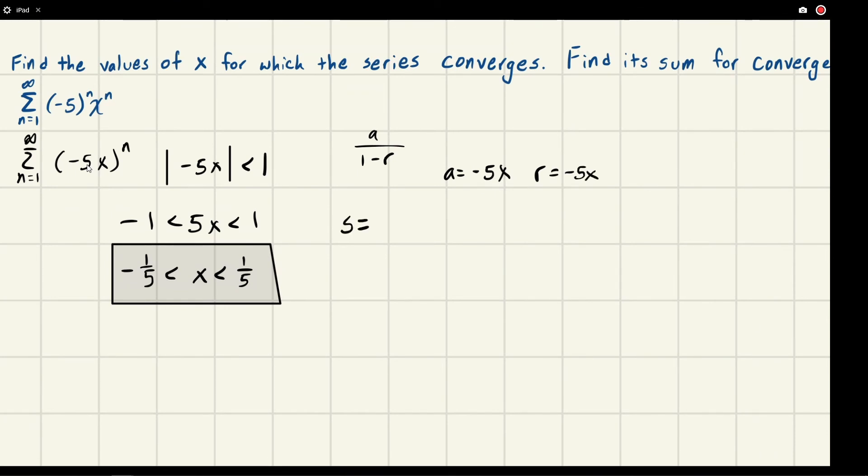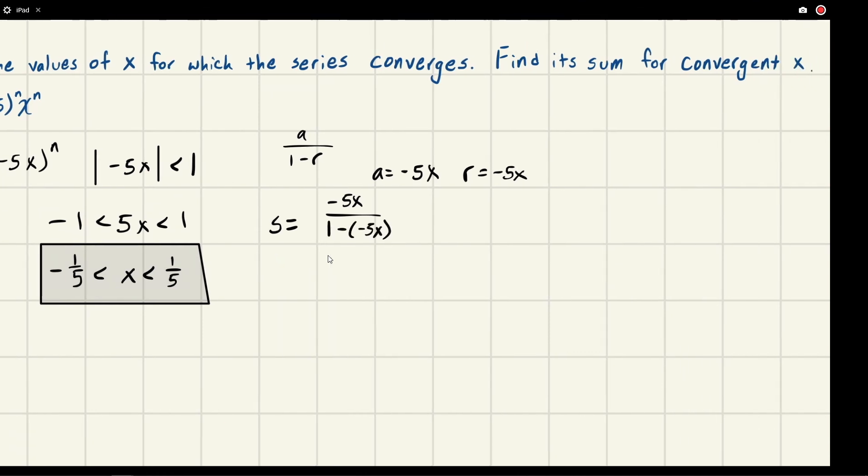So now we can just plug in and say the sum of this series for any x, and we know it's convergent, so this would only be true for convergent x, would be given by a, which is -5x, over 1 minus negative 5x. And this is equal to -5x over 1 plus 5x.